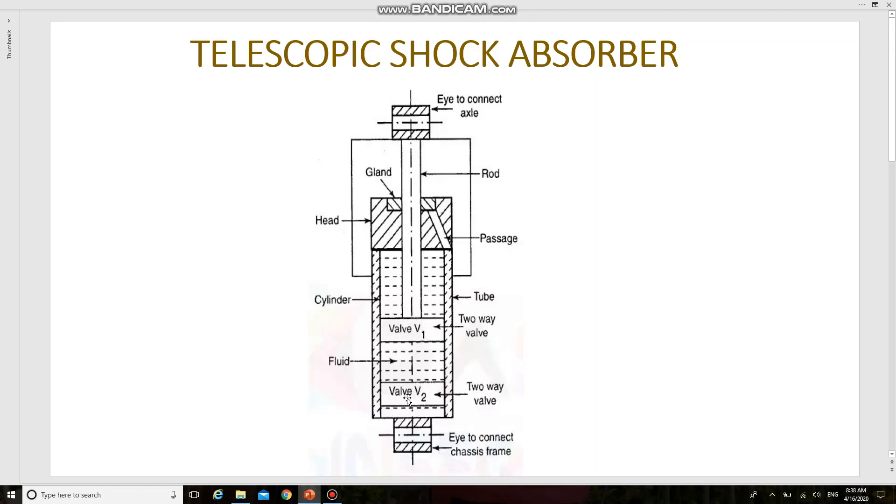The fluid will flow from the upper side of the valve v1 to the lower side when the lower eye moves down, and from lower side of the valve v2 to its upper side.